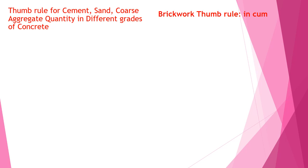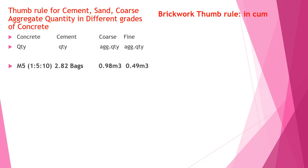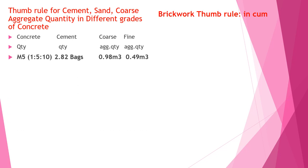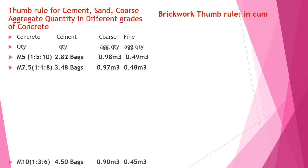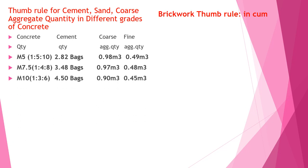Thumb rule for cement, sand, and coarse aggregate quantities for different grades of concrete. M5 (1:5:10): 2.82 bags of cement, 0.98 m³ coarse aggregate, 0.49 m³ fine aggregate per cubic meter. M7.5 (1:4:8): 3.48 bags, 0.97 m³ coarse aggregate, 0.48 m³ fine aggregate. M10 (1:3:6): 4.5 bags, 0.90 m³ coarse aggregate, 0.45 m³ fine aggregate — all per cubic meter of concrete.